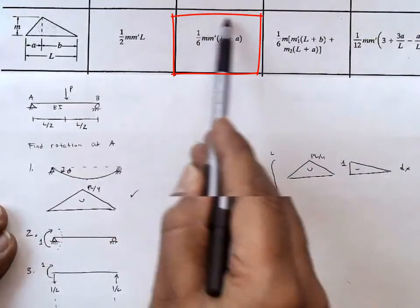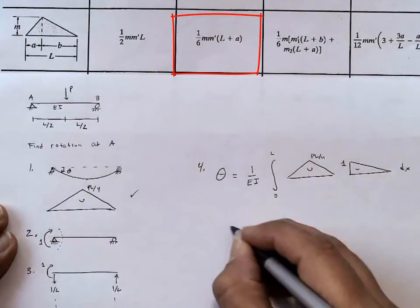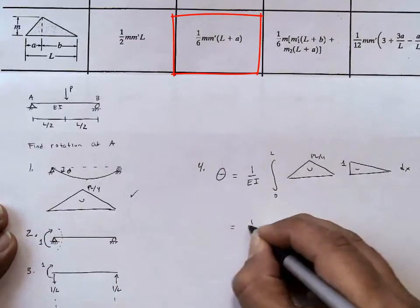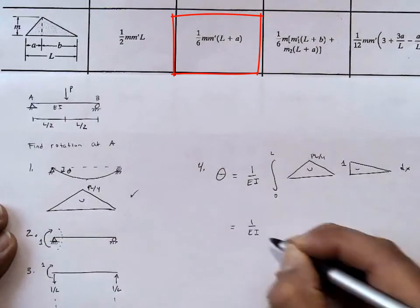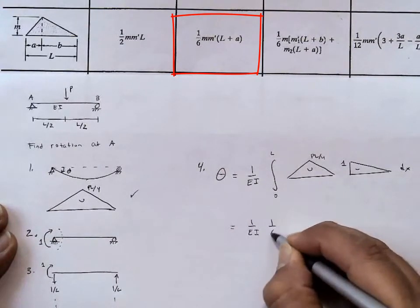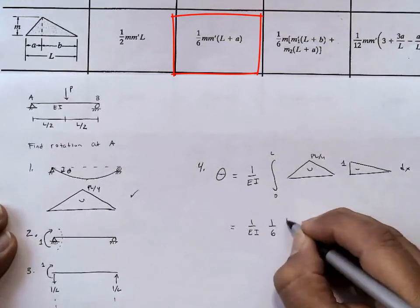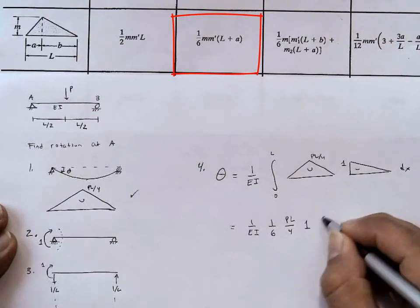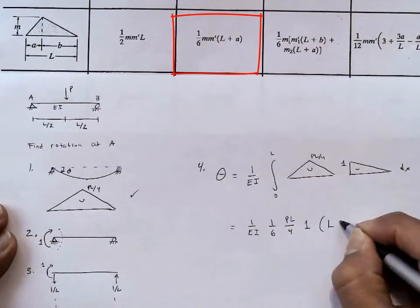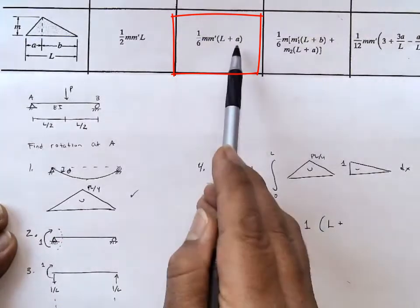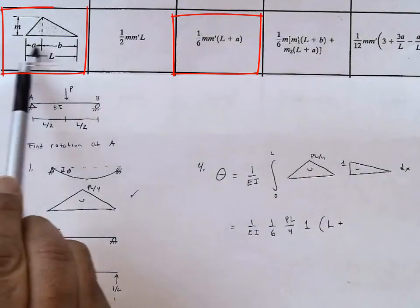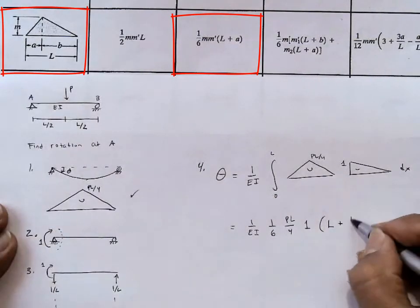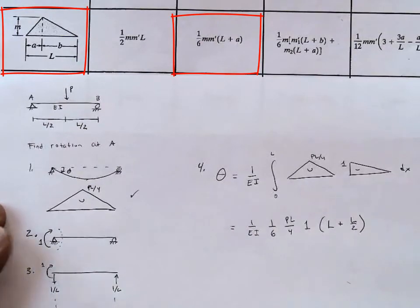And so we have that the rotation is equal to 1 over EI. 1 sixth is the factor, the height of one of the rectangles, the height of the other rectangle, and then this term here, L, and then plus the A, and the A is the distance L over 2 here. And so we're good to go.